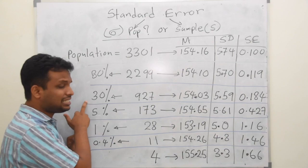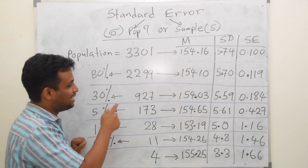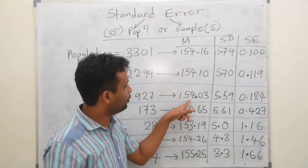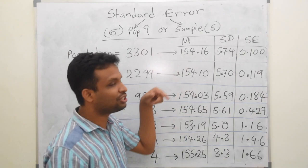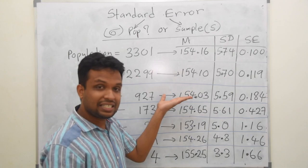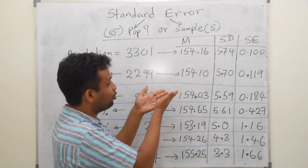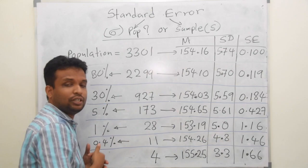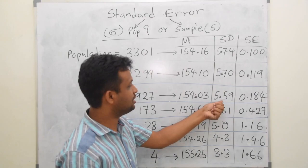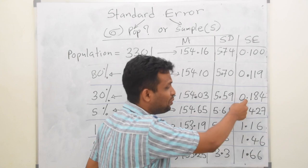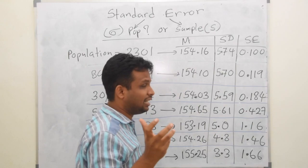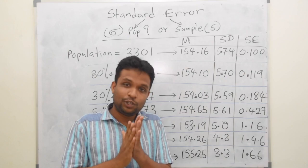I took another sample of 30% of individuals from this population — approximately 927. The mean was again 154.03, slightly less than the original value, but almost the same. Is there any practical problem using either value as the mean? No — even 30% is enough to calculate the population mean. Look at the standard deviation: it's gradually coming down. But even with a higher standard error, when you calculate the 95% confidence interval, it will still be a narrower range, which is enough for our purpose.